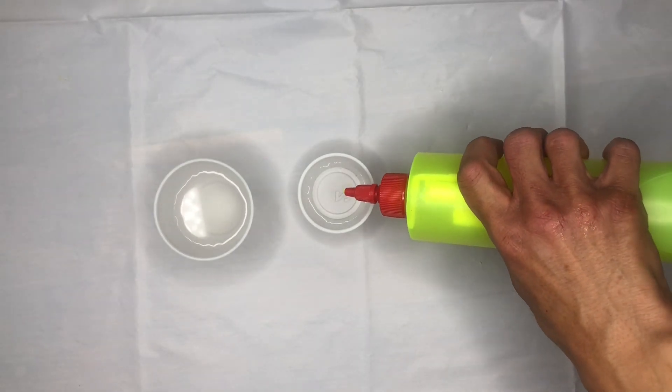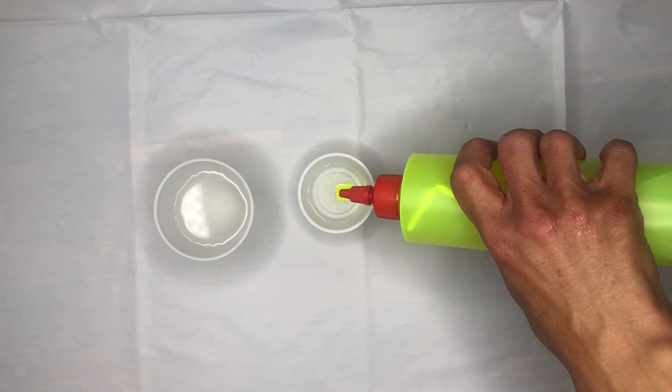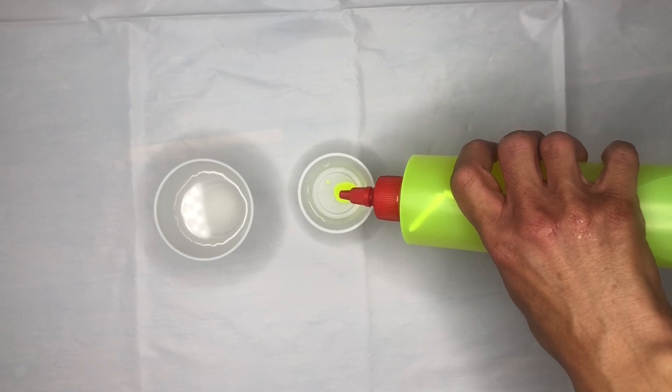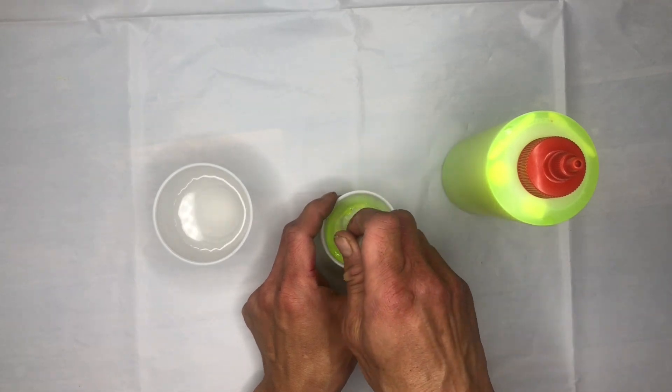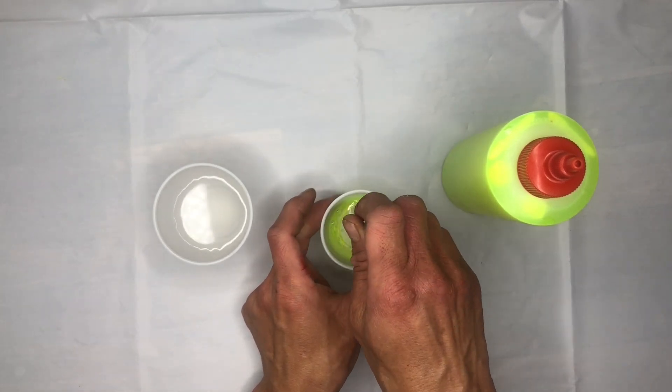We have two tablespoons of clear glue. We added 20 drops of our fluorescent marker solution to our clear glue and we'll mix. Stir until the marker solution is well mixed with your clear glue.